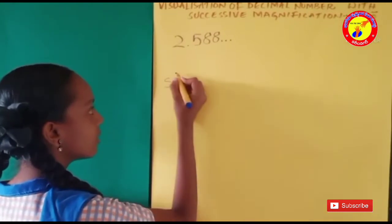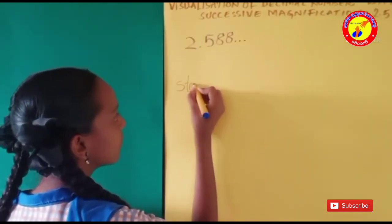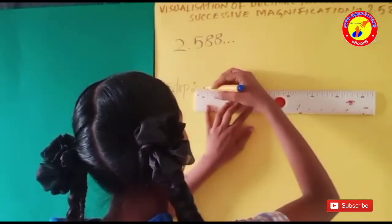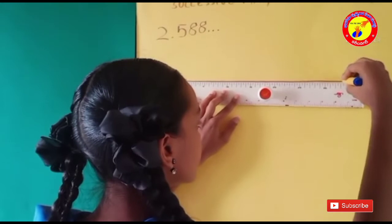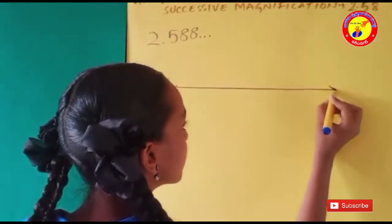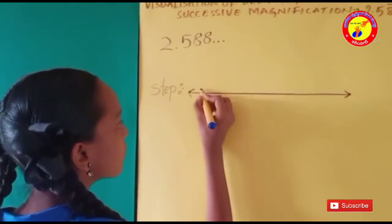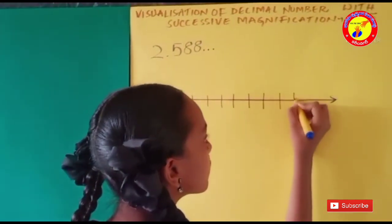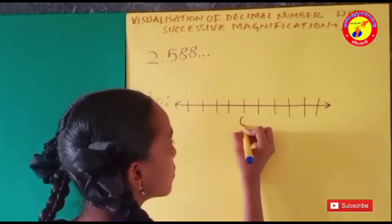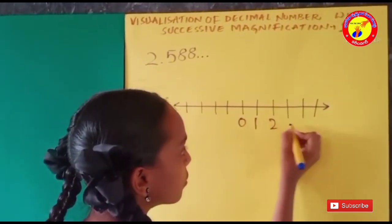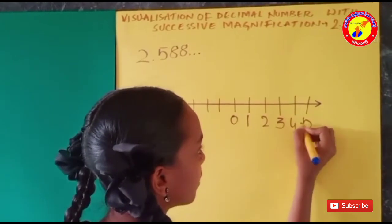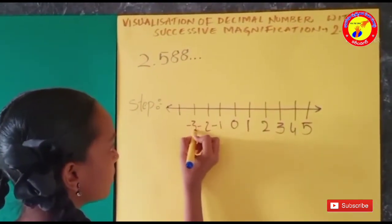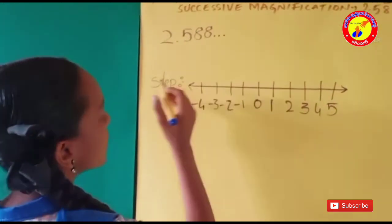Step 1. Draw a line. Mark 0, 1, 2, 3, 4, 5, and minus 1, minus 2, minus 3, minus 4.